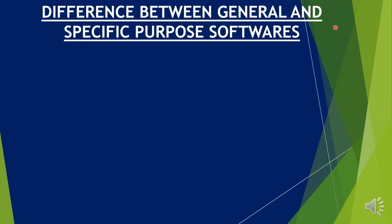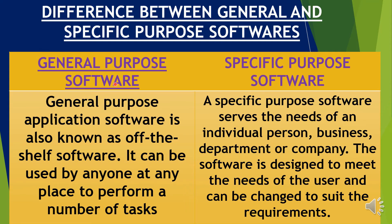Difference between General and Specific Purpose Software: General Purpose Application Software is also known as Off-the-Shelf Software — it can be used by anyone at any place to perform a number of tasks. Specific Purpose Software serves the need of an individual person, business, department, or company, and is designed to meet the needs of the user and can be changed to suit the requirements.